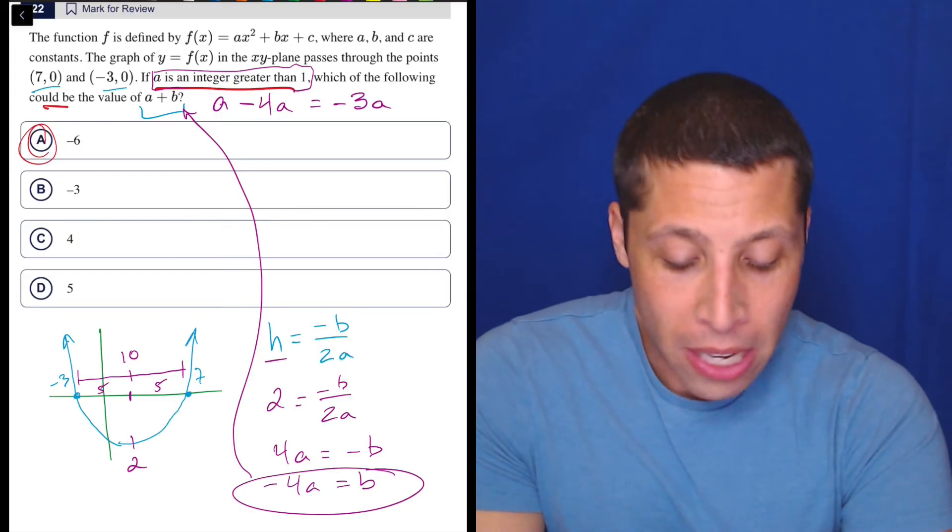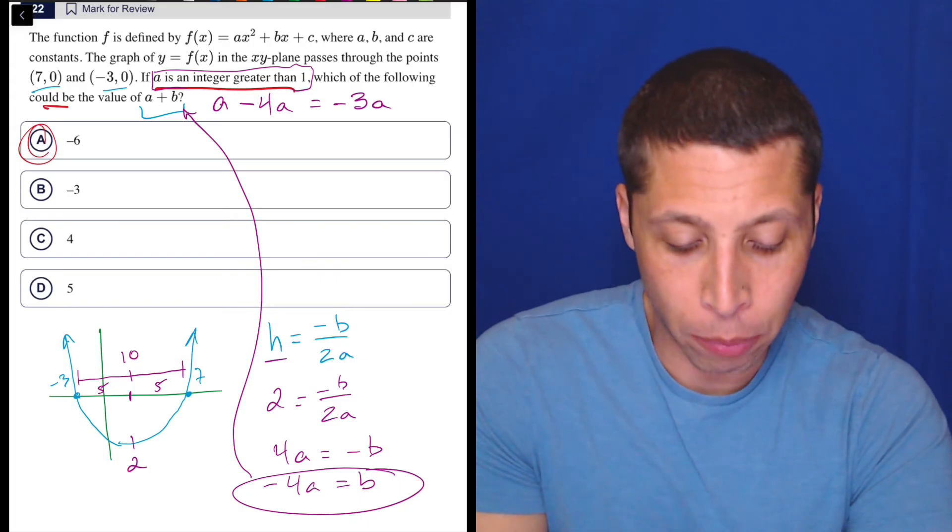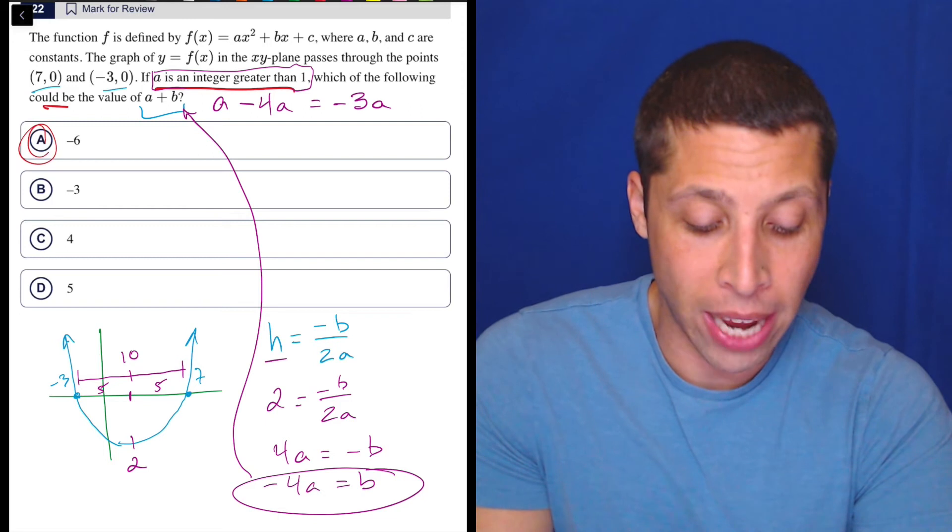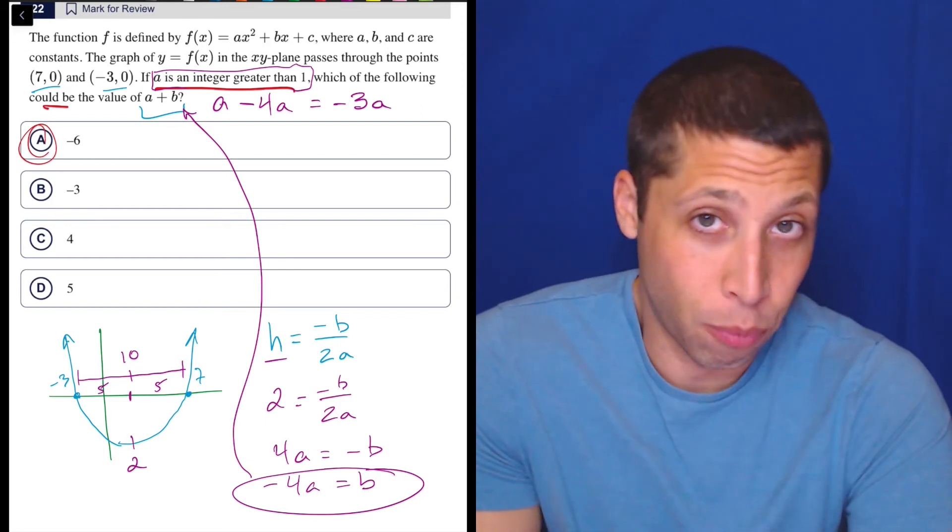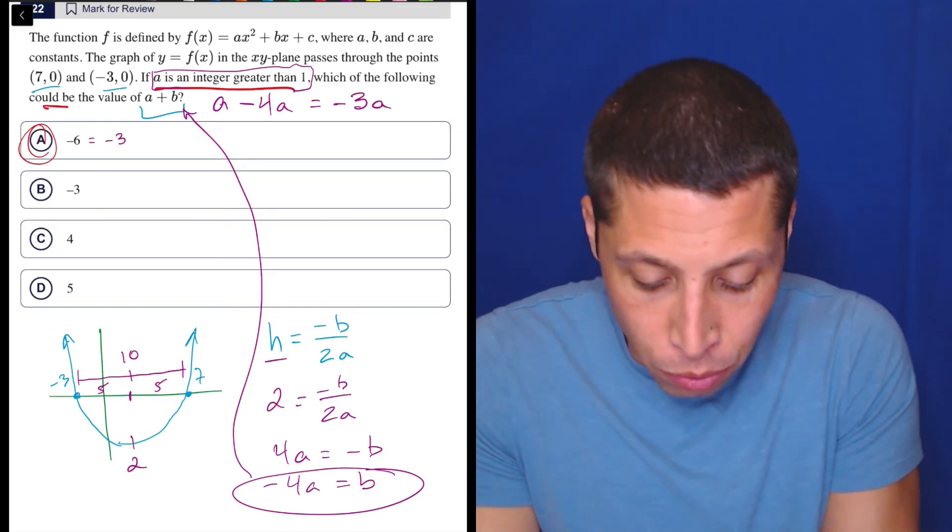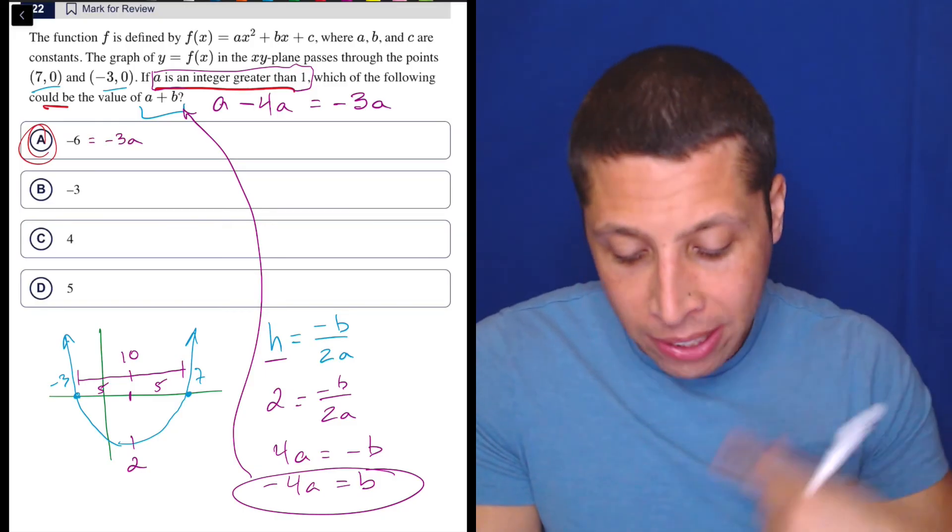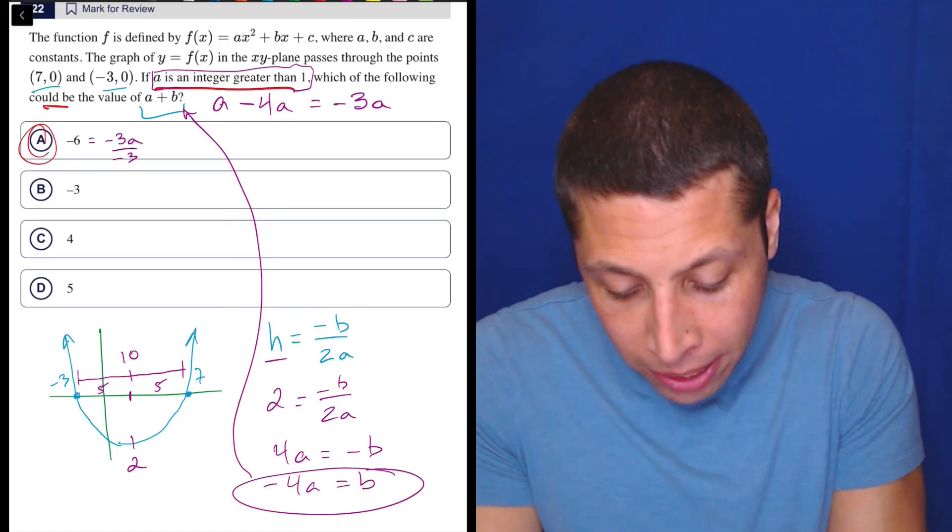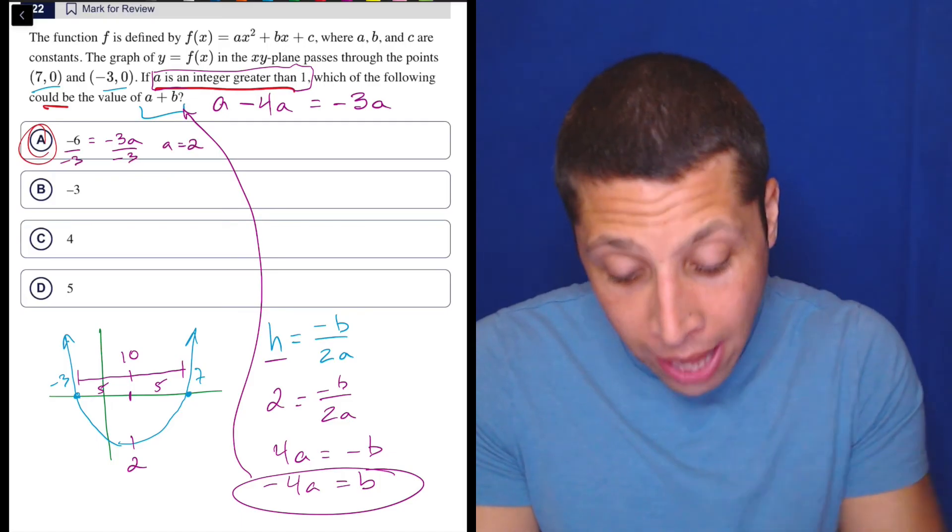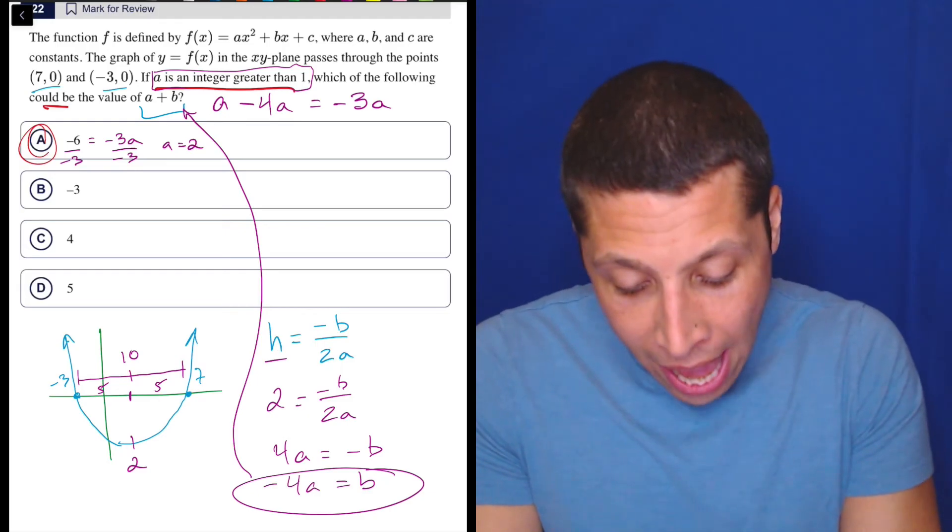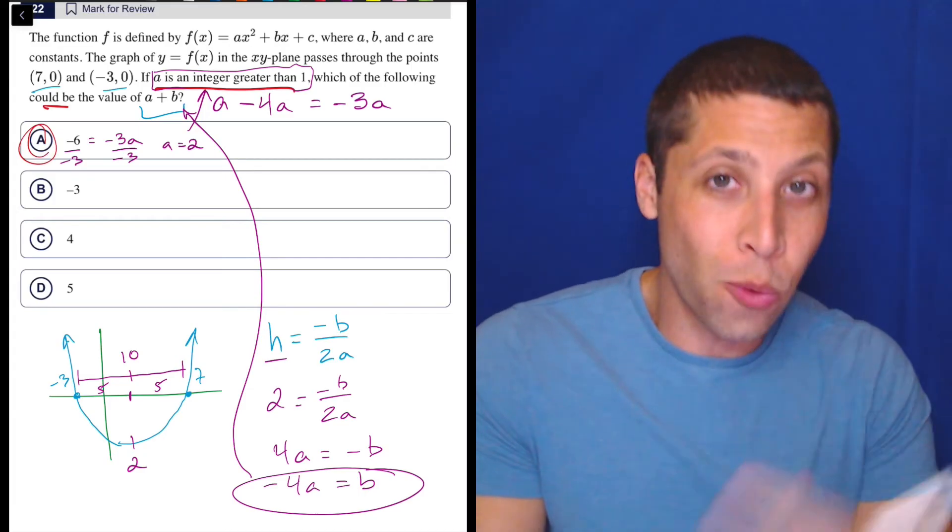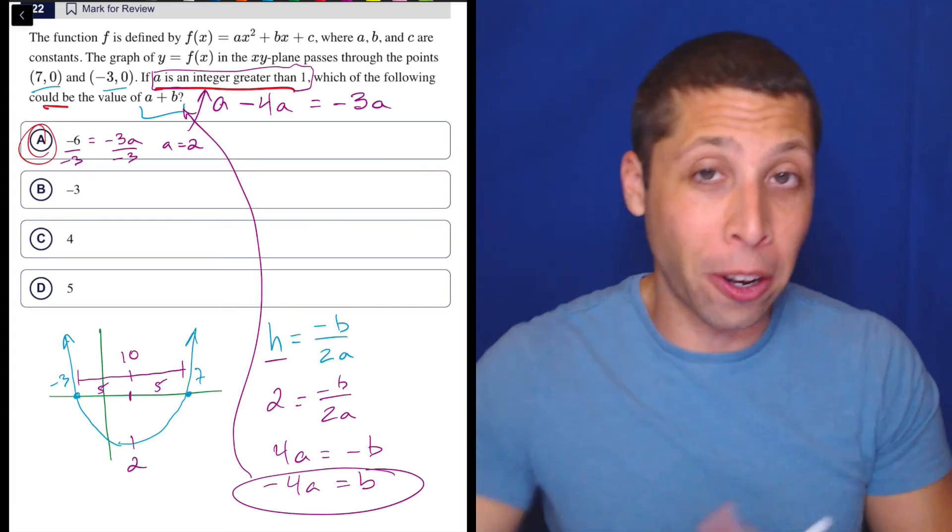So one of these choices has to give us, is equivalent to, or is a possible value of negative three A. And maybe there are other ways to do it from here, but at this point I would just be like, well, let's just try them out, right? So each of these is supposed to be a value of negative three A. Let's just see what happens if we set it equal, right? So we know that A, choice A is the answer. So if we set this equal to negative three A and we said, let's solve for A, right? We would divide by negative three and we would get that A is equal to positive two. Hey, that's what it was in Desmos, right?